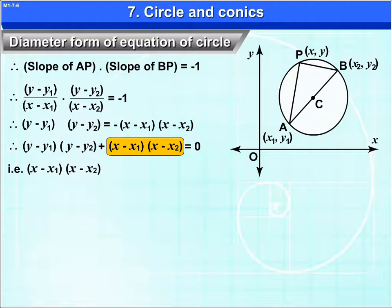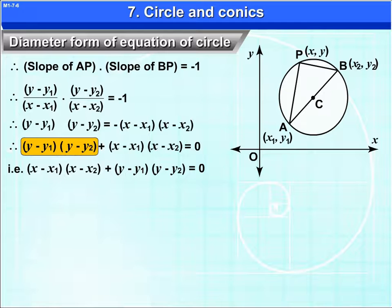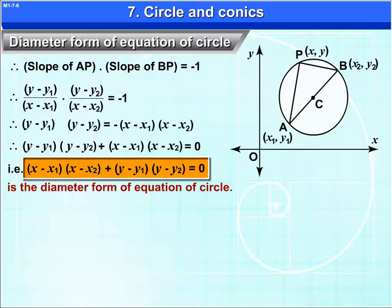That is, (x - x₁)(x - x₂) + (y - y₁)(y - y₂) = 0 is the diameter form of equation of circle.